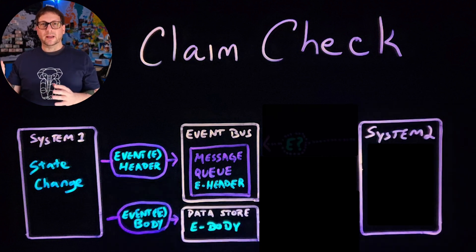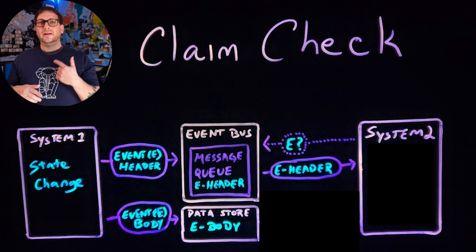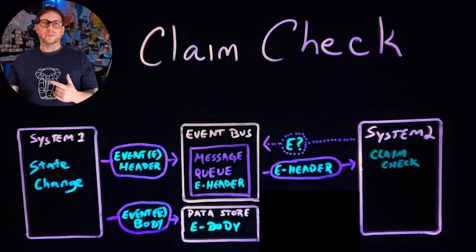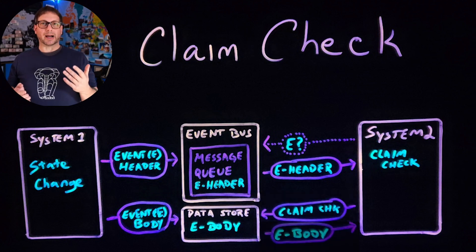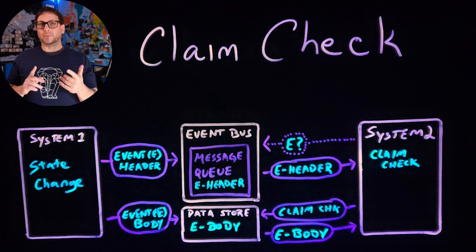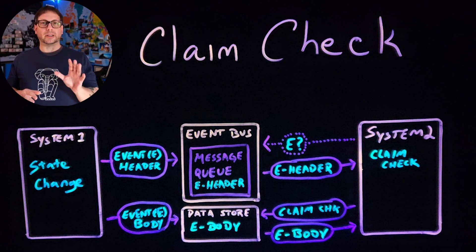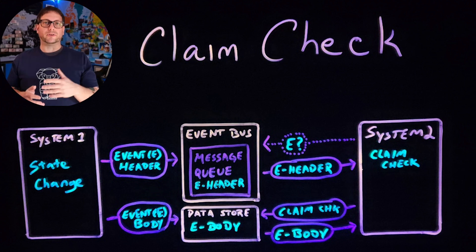When the subscribers on the other end retrieve the message, they're retrieving the message header, and the message header contains a pointer to the location in the data store where they can find the message body. The "when they're ready to process" part is key, because the subscribers don't necessarily have to process the event right away when they receive it. They can hold on to it, keep the pointer for reference later, and then retrieve the data when they're ready.